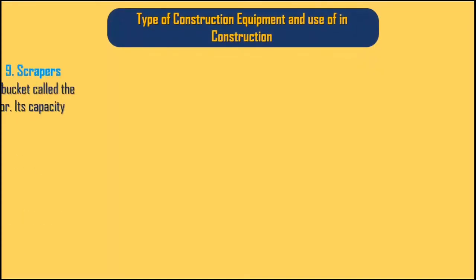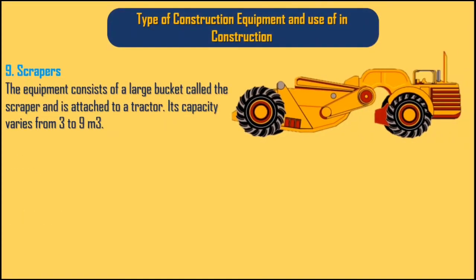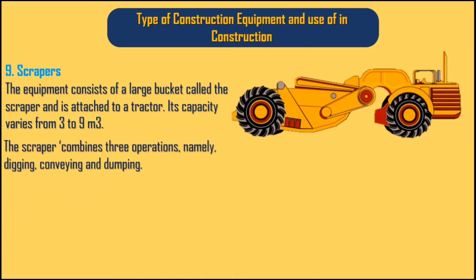9. Scrapers. The equipment consists of a large bucket called the scraper and is attached to a tractor. Its capacity varies from 3 to 9 cubic meters. The scraper combines three operations, namely digging, conveying, and dumping.